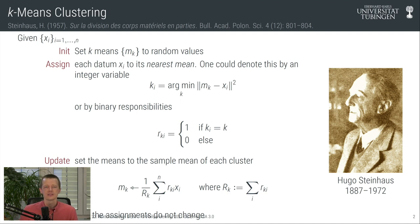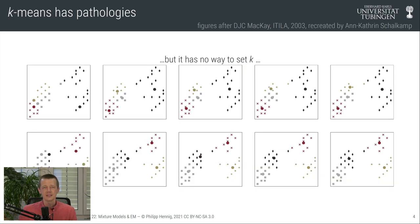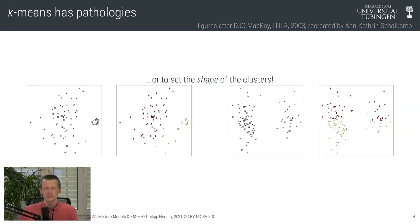We saw in the last lecture that while this algorithm works relatively well on simple data sets, it has a few pathologies. In particular, it has no way of setting the number of clusters k, and it doesn't work well when the data set has clusters of a certain shape — such as when clusters are imbalanced, with one being broad and wide and another narrow and small, or when clusters are spatially extended.